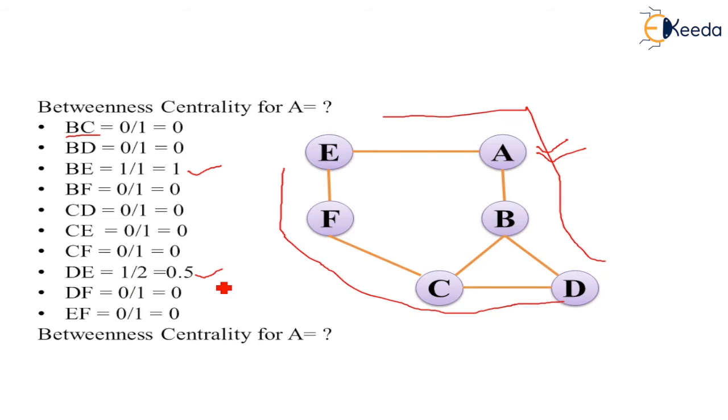That is how we calculated the D,E value. Now we will sum them: 0 plus 0 plus 1 plus 0.5 plus 0. So betweenness centrality for A is 1.5. We only sum these, the others are 0, no need to add them.